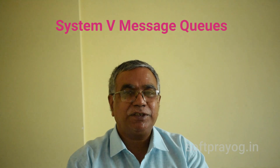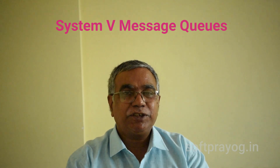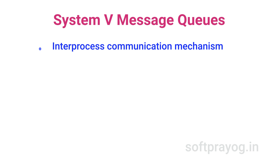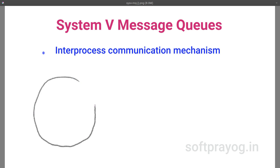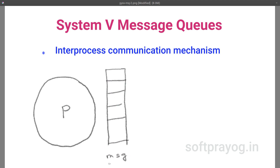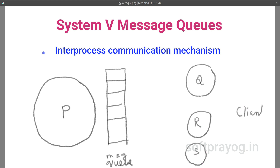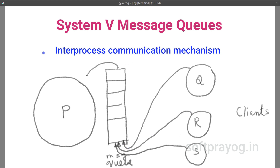System V refers to UNIX System V Release 1, 1983, and message queues were introduced in UNIX in that release. A message queue is an inter-process communication mechanism — a mechanism using which one process can communicate with another. It is created and managed by the kernel in response to system calls made by processes. A process that wants to receive messages can create a message queue for itself, make sure that likely clients know its ID, and then wait for messages to come in. Processes that want to communicate with a particular process should know the message queue ID of that process and then send a message to the queue of that process.